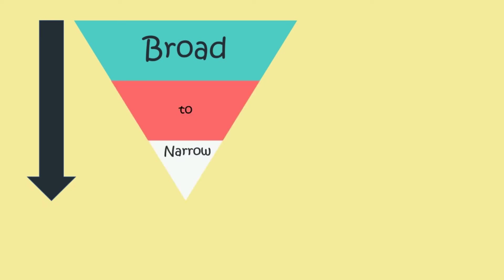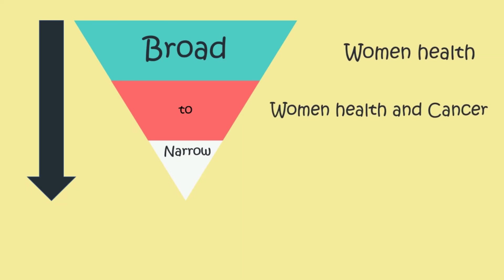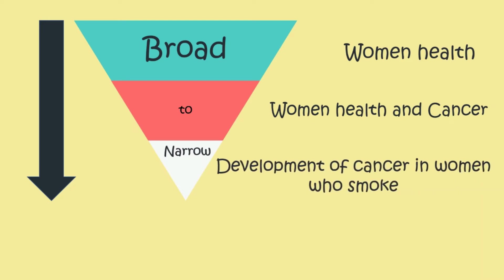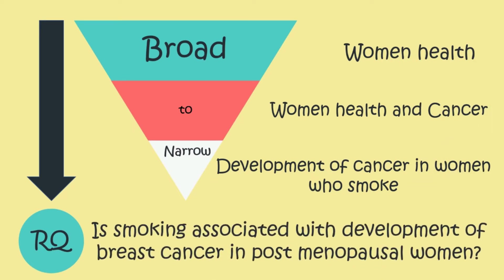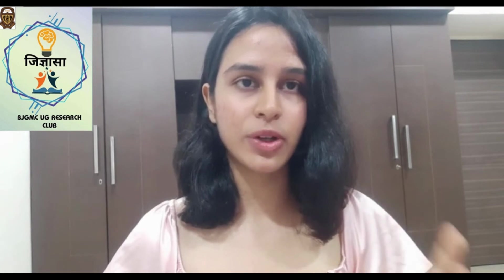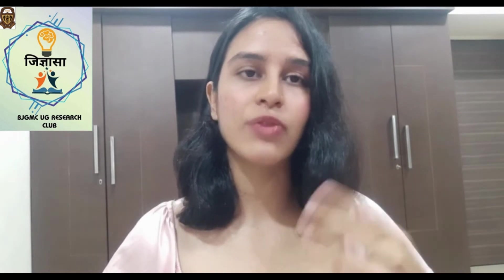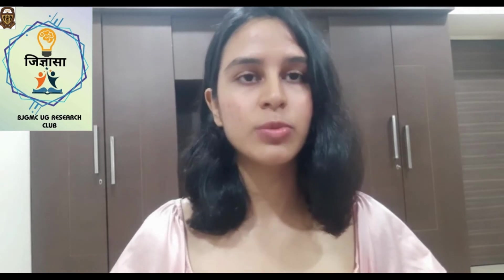That was all about the FINER criteria. To simplify further, here is an example. If you have a broad research topic regarding women and health, you could narrow it down to women's health and cancer, then further focus on the development of cancer in women who smoke, and finally build a question such as: 'Is smoking associated with the development of breast cancer in postmenopausal women?' This is how you narrow down your topic, apply the FINER criteria, and build your research question.